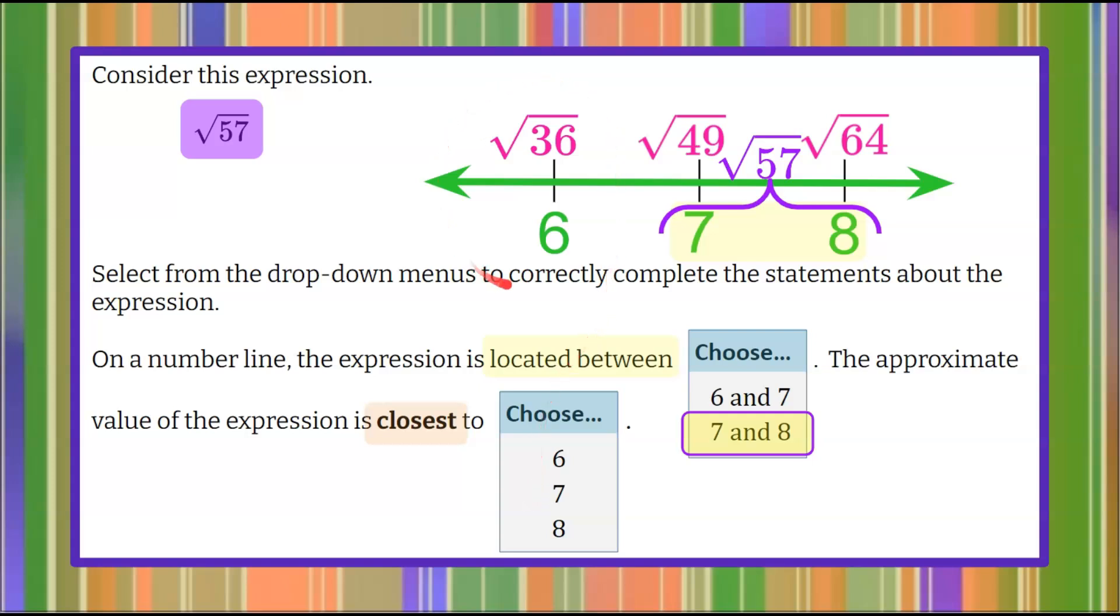So we know that we can eliminate 6 as an answer choice seeing as we know that it's greater than the square root of 49 and less than the square root of 64. So we can already see that it's going to be 7 or 8.